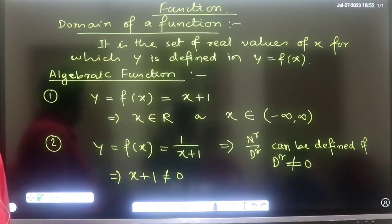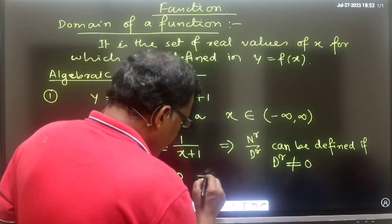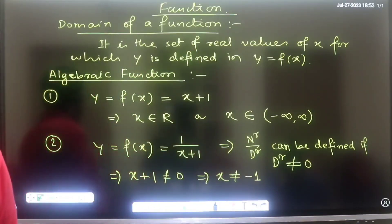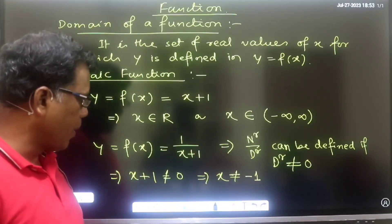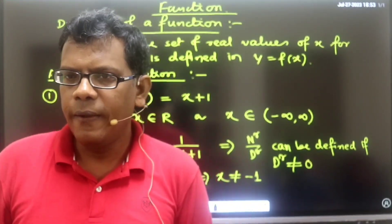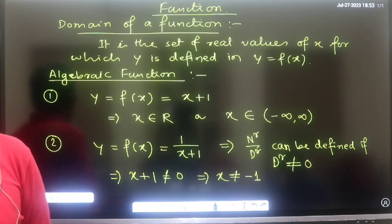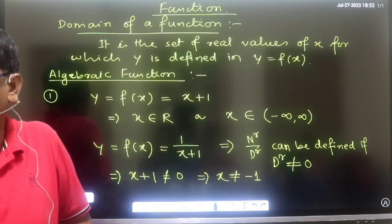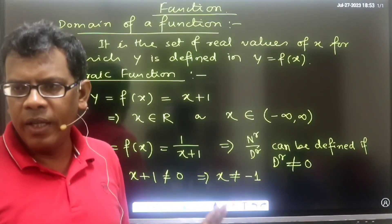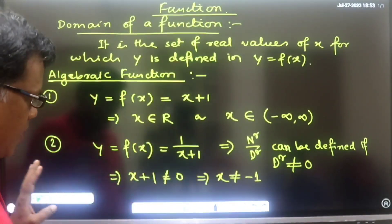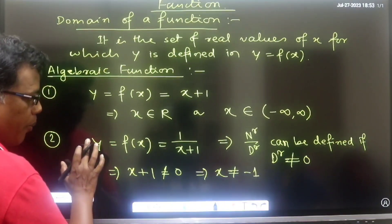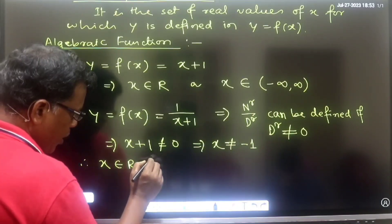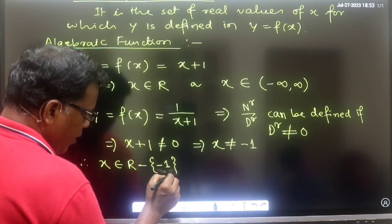This means I can't allow x to be equal to −1. So in this particular mathematical function, the denominator must not be zero, which means I cannot take x = −1. Therefore, in the domain, every real value of x is permissible except −1.